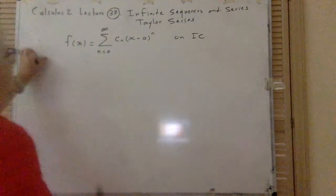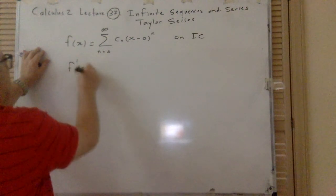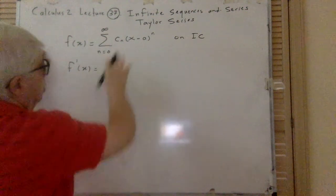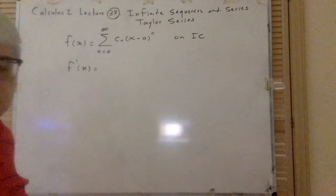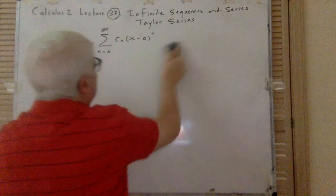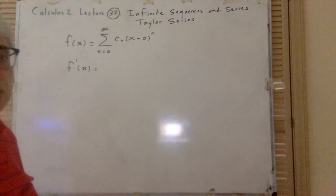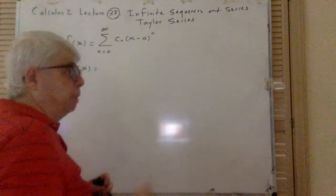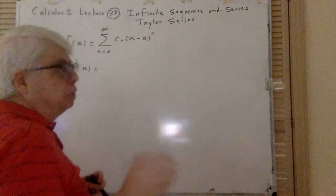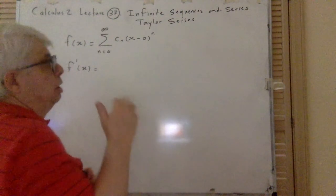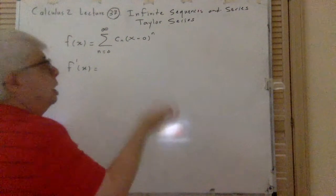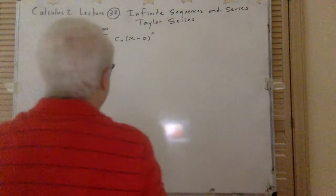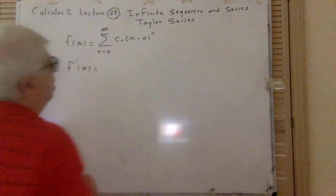Let's find the first derivative and see what happens. F prime of x — I said that you can find the derivative of every term here, one by one. That was the meaning of derivative commuting with sigma. But derivative always commutes with sigma if that is a finite sum. Well, that is an infinite sum, and in fact derivative itself is a limit. This is also a limit — you are saying these two limits somehow commute.